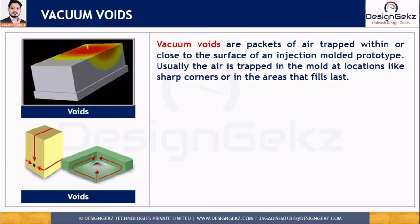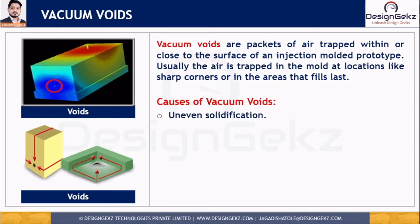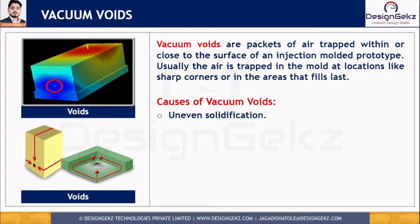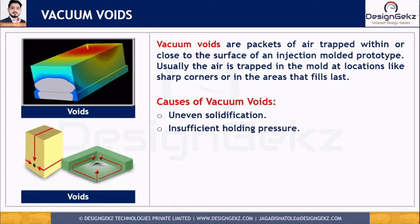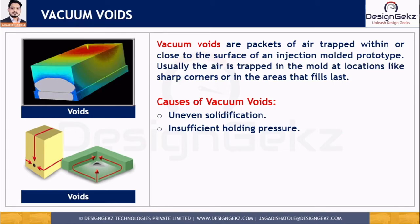Now let's discuss the causes of voids. The first cause is uneven solidification. Vacuum voids are often caused by uneven solidification between the surface and the inner section of the part. The second reason is insufficient holding pressure. Uneven solidification leading to vacuum voids can be mitigated when the holding pressure is insufficient to compensate for the molten plastic shrinkage in the mold.